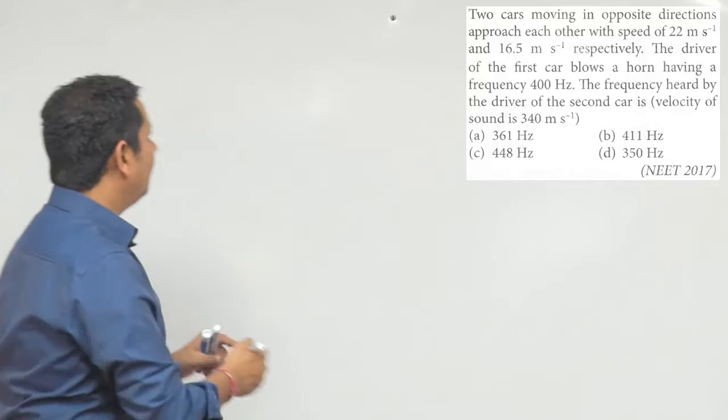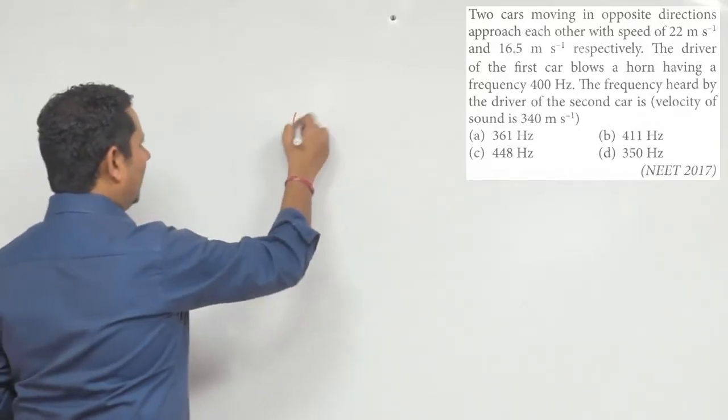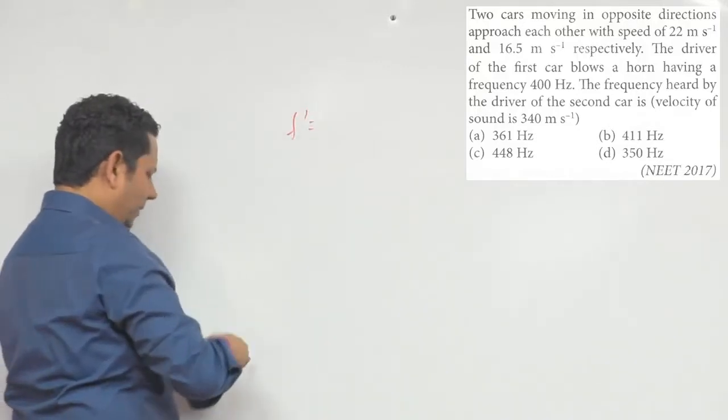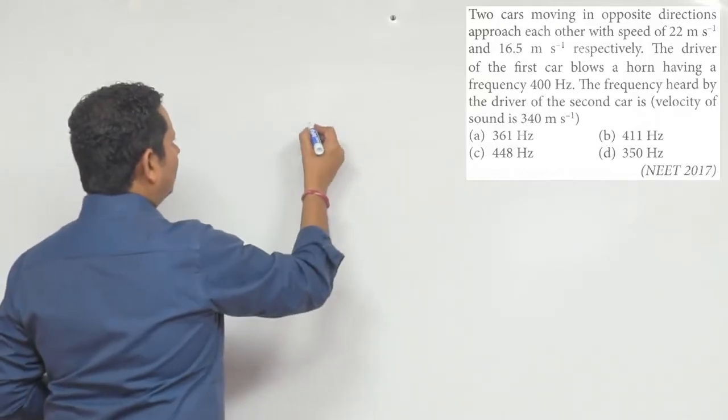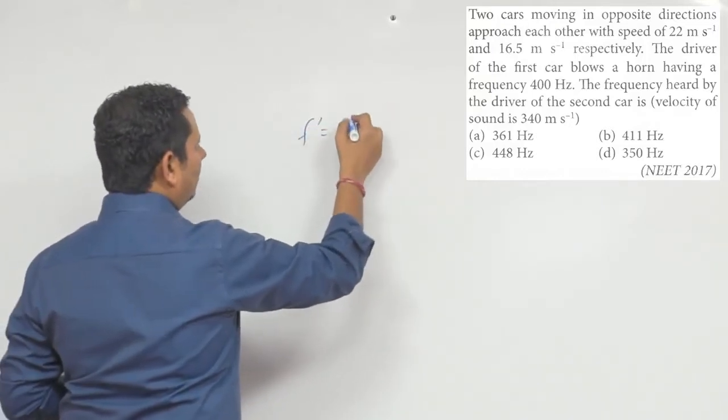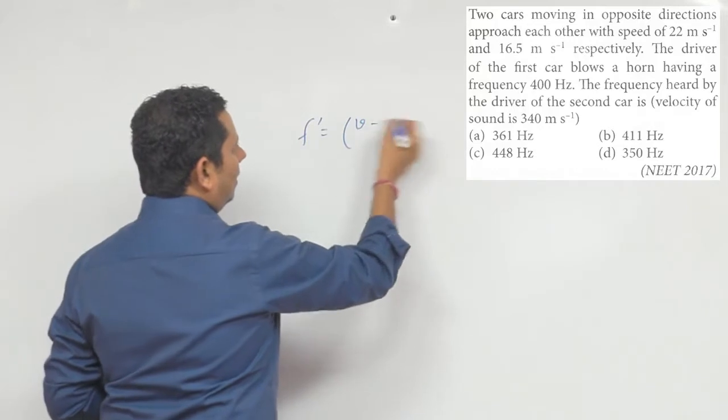We will use the formula from Doppler effect. We know that f dash, which is the apparent frequency, can be written as f dash equals velocity of sound